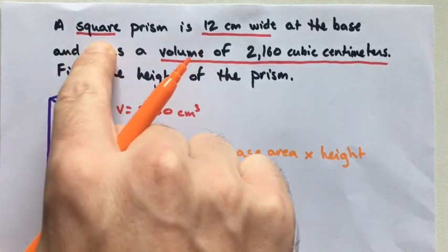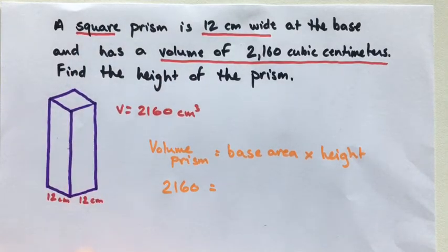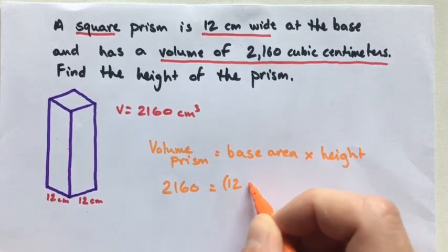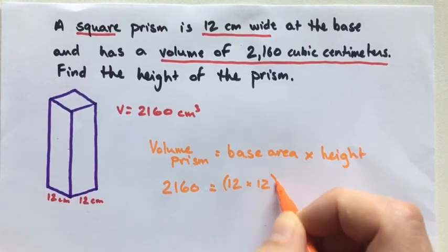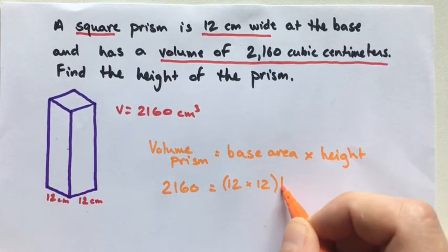My base is a square, and we know that the area of a square is side times side. So we know that the base area is going to be 12 times 12. And we're going to multiply all that times height.